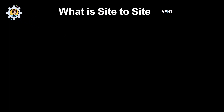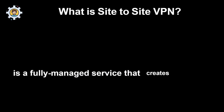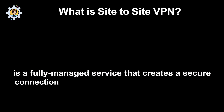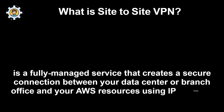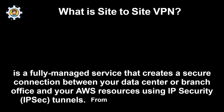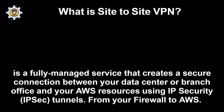What is Site-to-Site VPN? It is a fully managed service that creates a secure connection between your data center or branch office and your AWS resources using IP security (IPsec) tunnels. From your firewall to AWS.